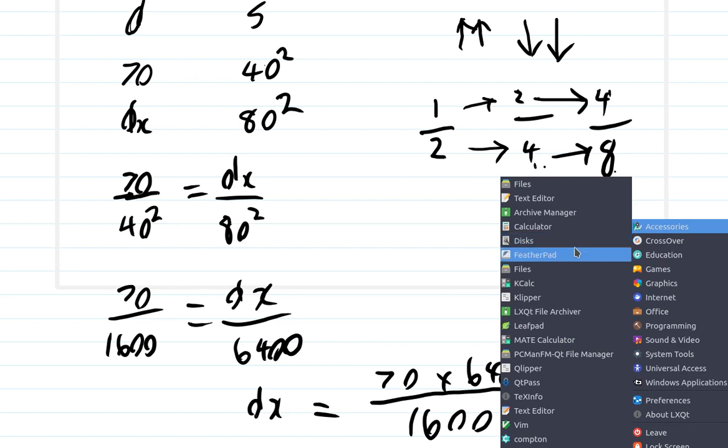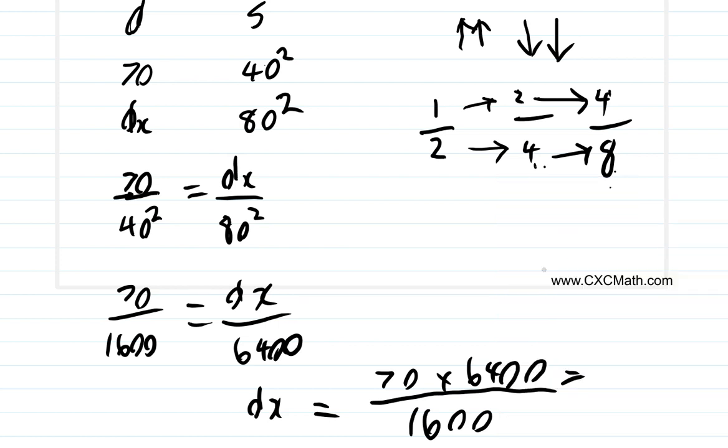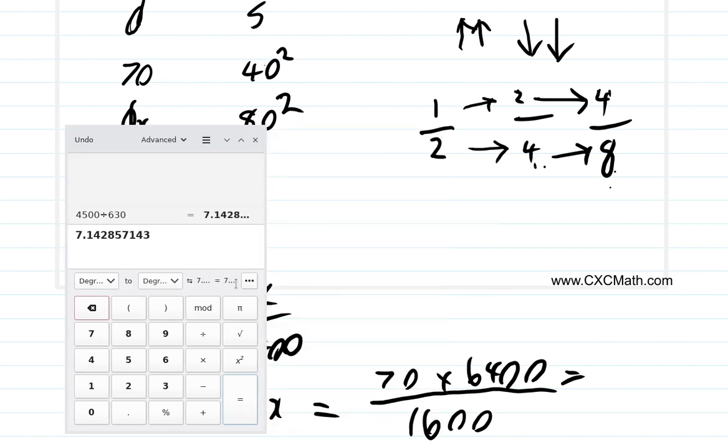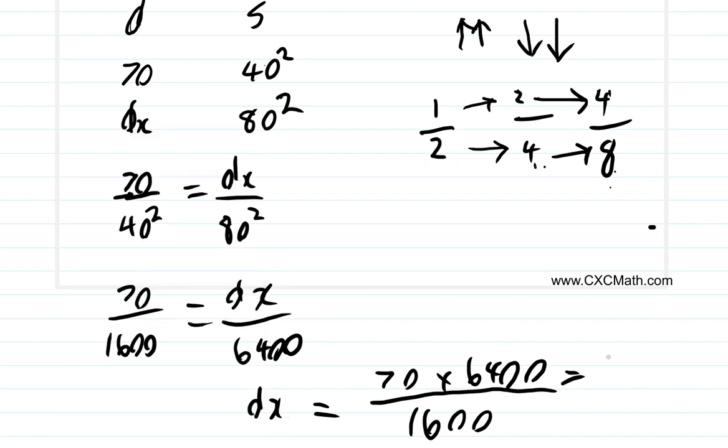So, let's see what the case will be here now. 70 times 6,400, and then that over 1,600 equals 280. 280.